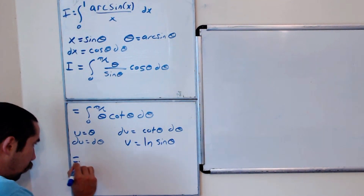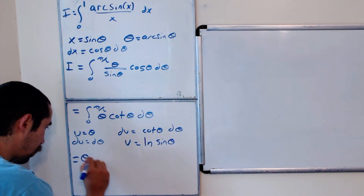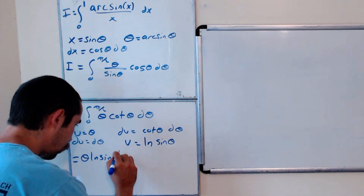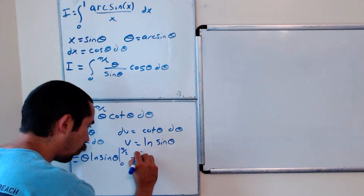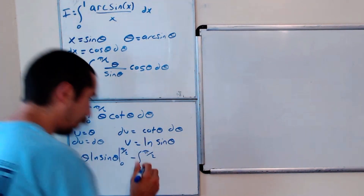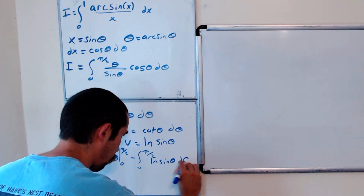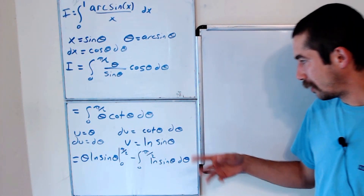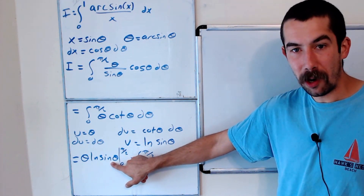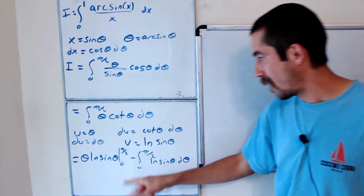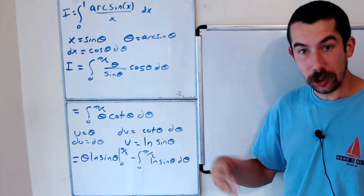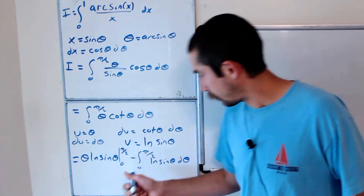Our integral is u times v — so theta times natural log of sine theta, evaluated at our endpoints — minus the integral from 0 to pi over 2 of ln of sine theta d theta. When we plug in theta equals pi over 2, sine of pi over 2 is 1, and natural log of 1 is 0, so that term goes to 0. Similarly, plugging in 0 also gives 0 (you can verify with L'Hôpital's rule).